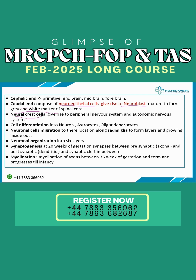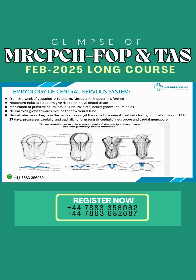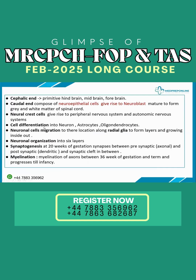The neural crest cells — shown previously in blue just above the neural tube — give rise to the peripheral nervous system and the autonomic nervous system. This is an important point because some questions ask about Hirschsprung disease, which involves aganglionic cells of the rectum. The answer traces back to neural crest cells, which give rise to the autonomic nervous system and supply the GIT.